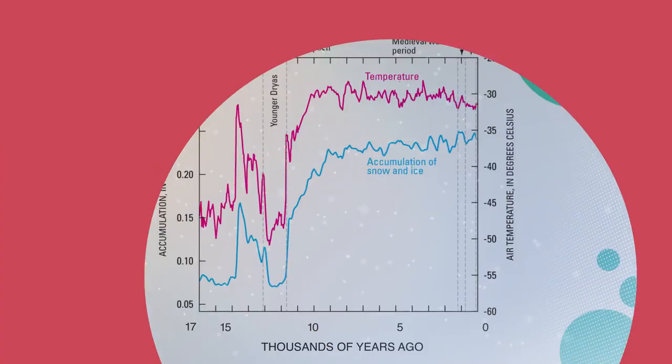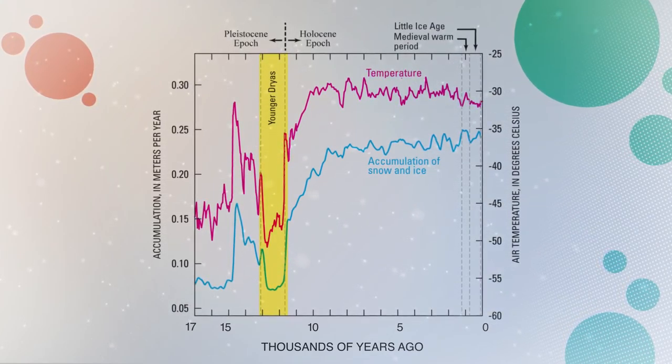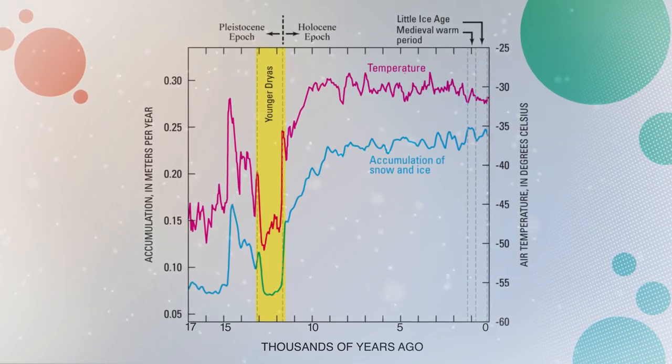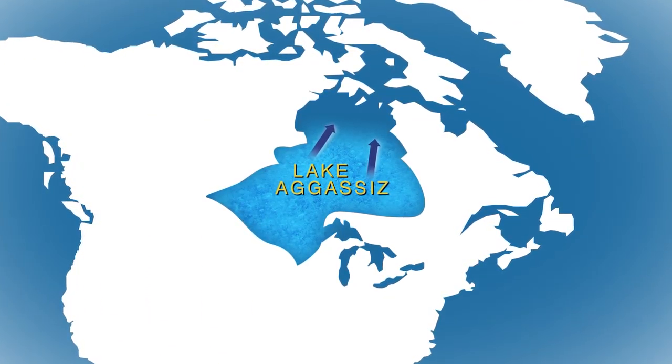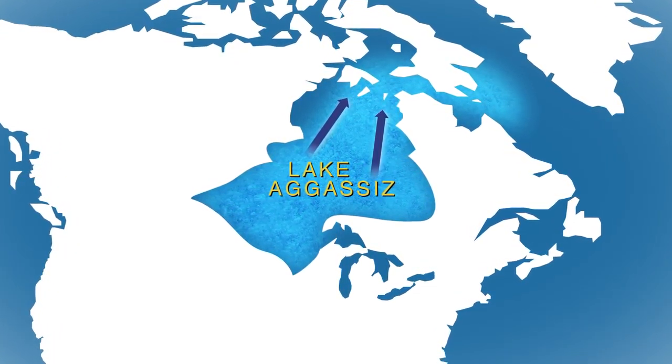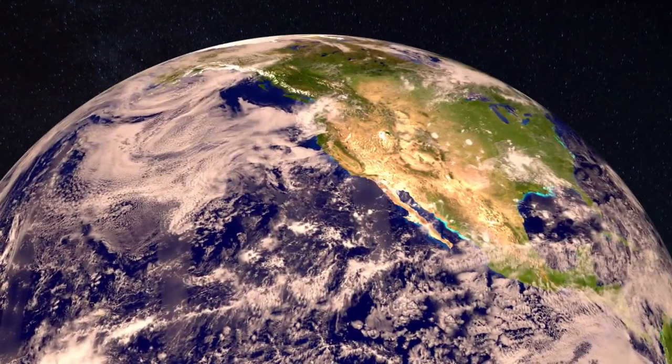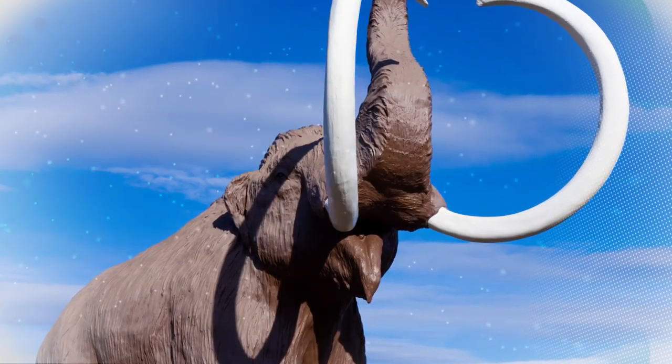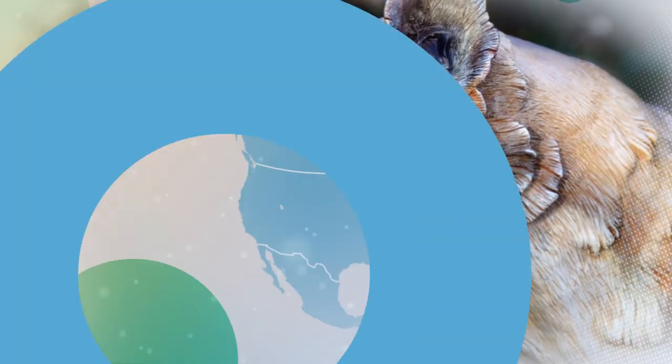Additionally, ice core records and other paleoclimatic records tell us that the deglacial interval was not a period of constant warming, but one with an extreme cooling event called the Younger Dryas, when temperatures in Greenland dropped in a few decades to almost full glacial temperatures for 1,200 years. Due to rapid freshwater runoff from the melting ice sheets into the North Atlantic, the Younger Dryas occurred from 12,900 to 11,700 years ago with colder, drier conditions mostly in the northern hemisphere, and has been linked to mass extinctions of woolly mammoths, saber-toothed tigers, and other large mammals in North America and Eurasia. Also, some researchers suggest that the start of agriculture in the eastern Mediterranean occurred during the Younger Dryas, as grain became scarce.